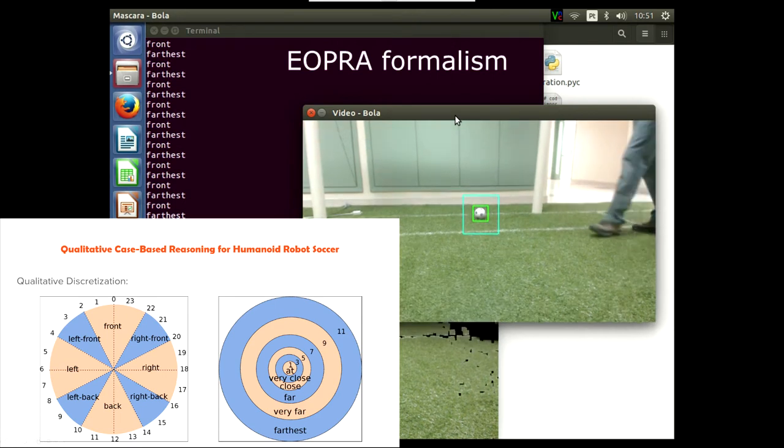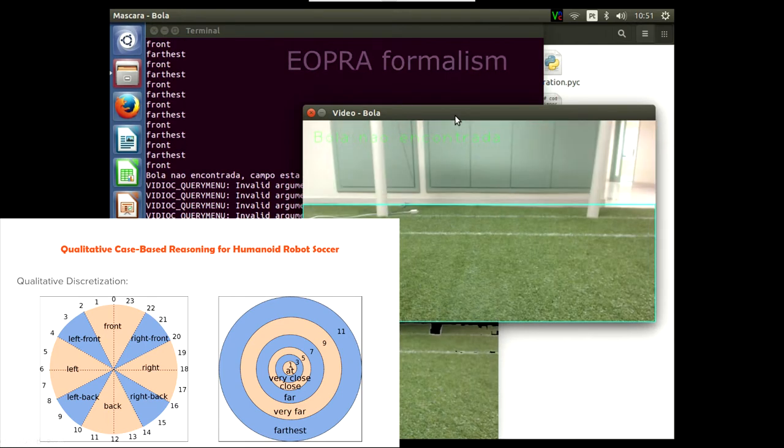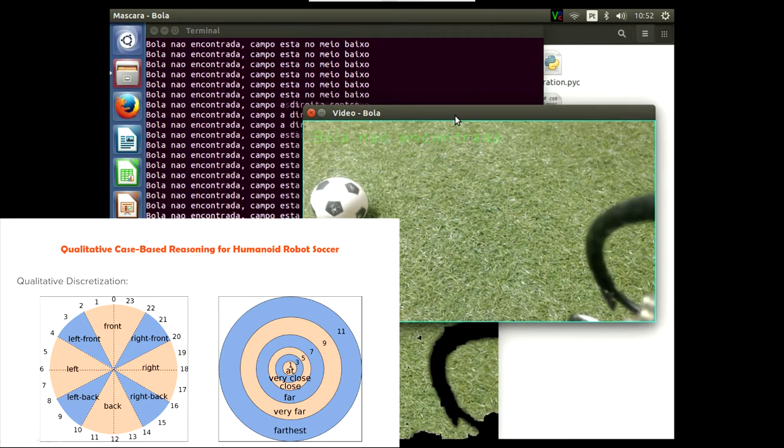And the qualitative distance is composed of 6 regions, named at, very close, close, far, very far and farthest.